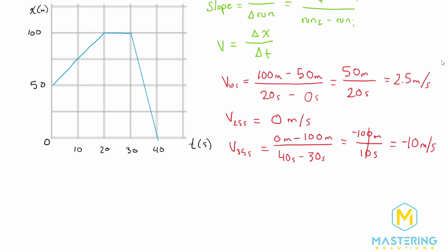So these are the velocities for t equals 10 seconds, t equals 25 seconds, and t equals 35 seconds from the position versus time graph.